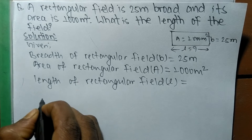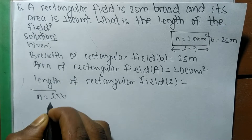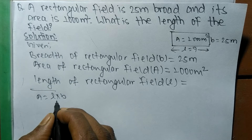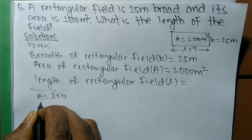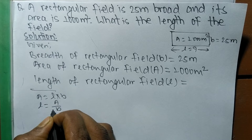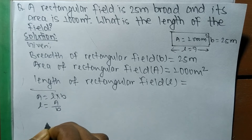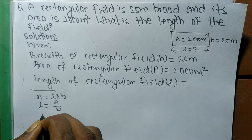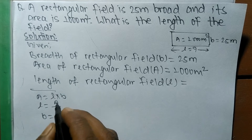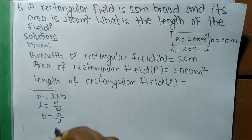For a rectangular shaped object, its area equals l times b — length times breadth. When we have to find out length, then l equals A divided by b. This is because b was multiplying, so when changing sides it becomes division. Similarly, b equals A divided by l, since l is also multiplying and becomes division when changing sides.